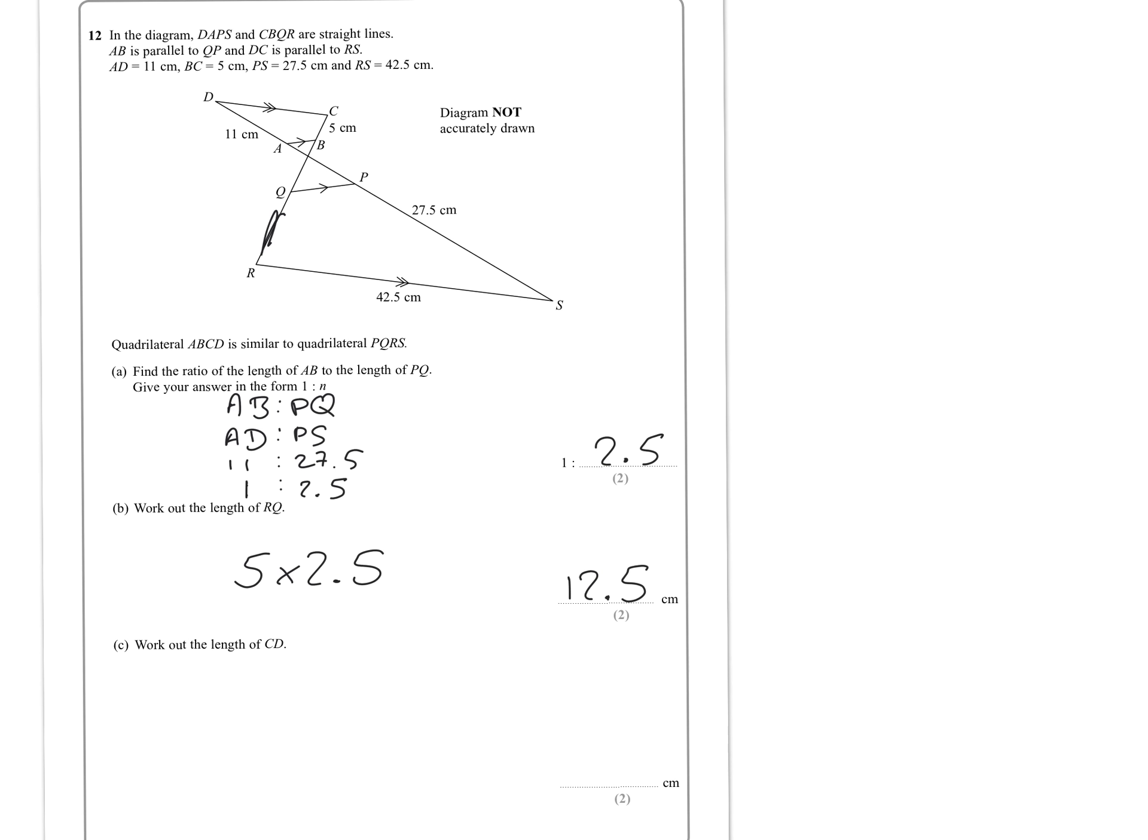Work out the length CD. Well, CD is 2.5 times smaller. So 42.5 divided by 2.5 is going to be 17. There we go.